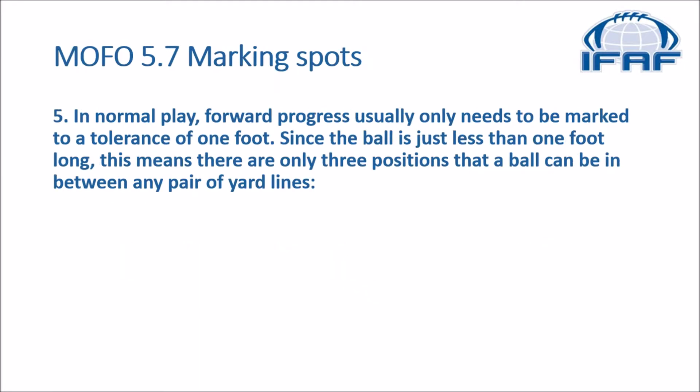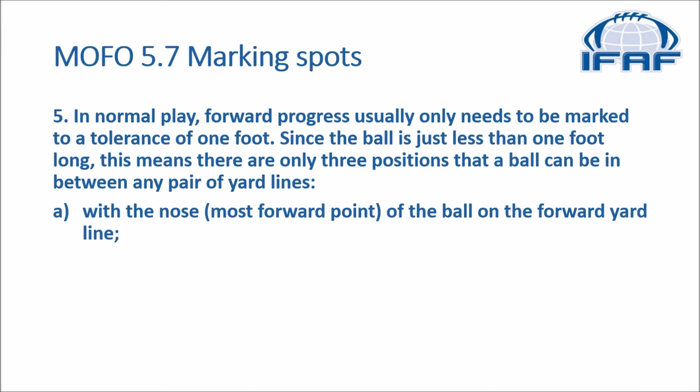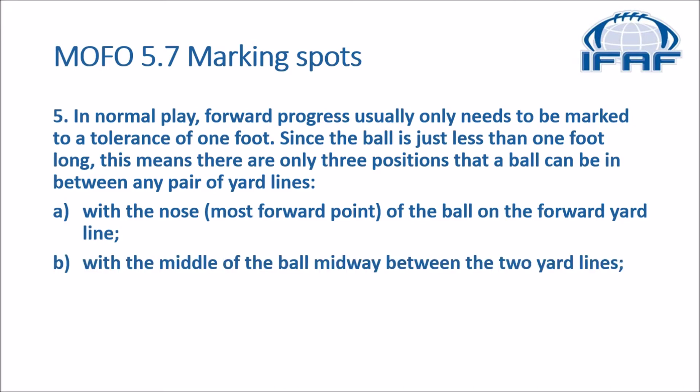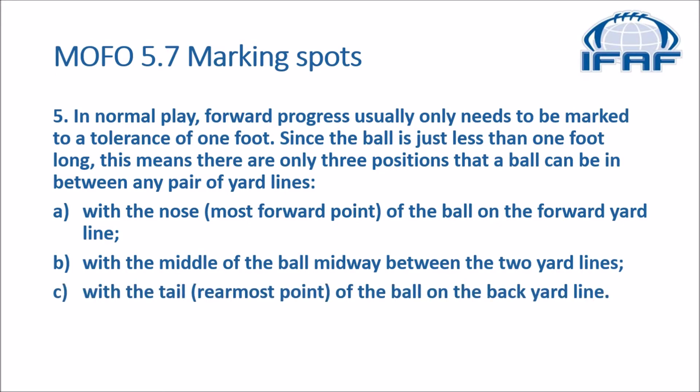In the MOFO, we go to 5-7 dealing with marking spots. In normal play, forward progress usually only needs to be marked to a tolerance of one foot. Since the ball is just less than one foot long, this means there are only three positions a ball can be in between any pair of yard lines: A with the nose, the most forward point on the forward yard line; B with the middle of the ball midway between the two yard lines; and C with the tail, the rearmost point on the back yard line.